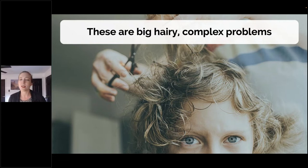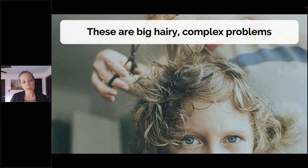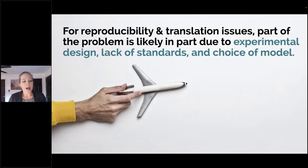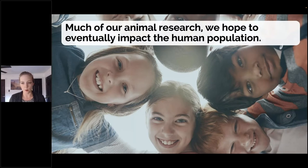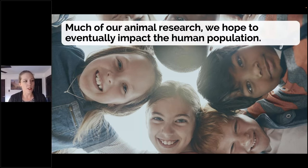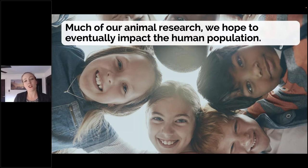Translation, reproducibility, cost, and acceptance — there's not just one thing we can do to solve them. They're very complex, with lots of different inputs. We at NA3RC truly believe that applying the 3Rs are part of the solution. For reproducibility and translation in particular, we believe that part of the problem is due to experimental design, lack of standards in some cases, and the choice of model. The large majority of our animal research, we hope, is going to eventually impact the human population.